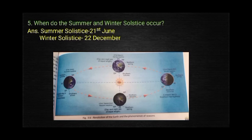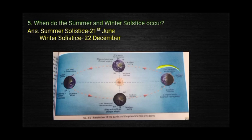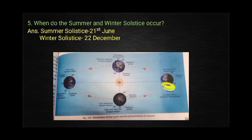Question 5: When do the summer and winter solstice occur? Summer solstice is when the sun's vertical rays fall on the northern hemisphere, occurring in summer on 21st June. Winter solstice is when the sun's vertical rays fall on the southern hemisphere, occurring in winter on 22nd December. With this we have covered Question sections A, B, and C.